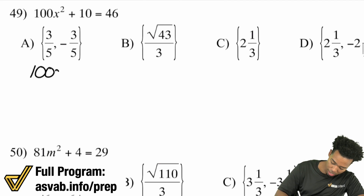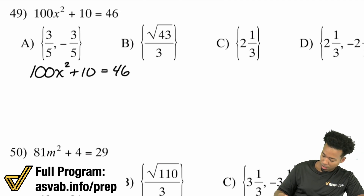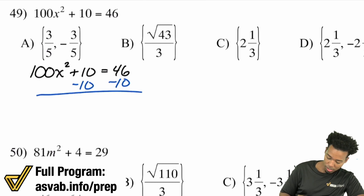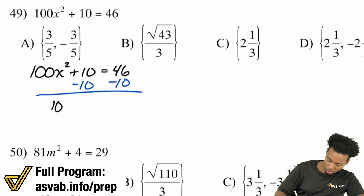Another example: 100x squared plus 10 equals 46. First, subtract 10 from both sides to get 100x squared equals 36.